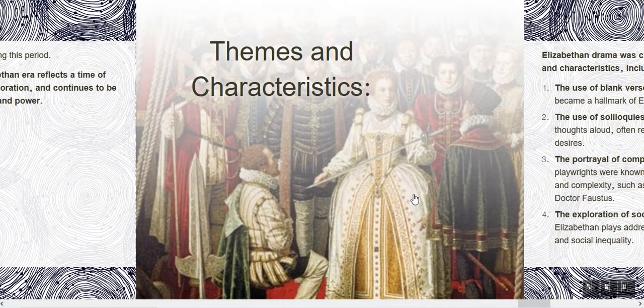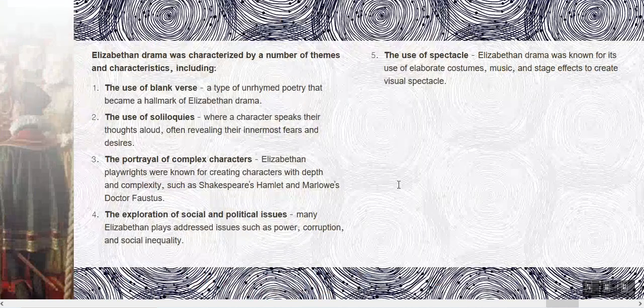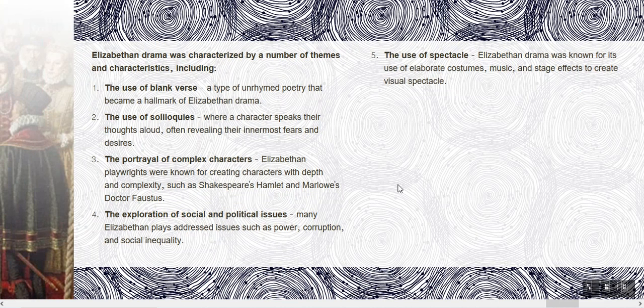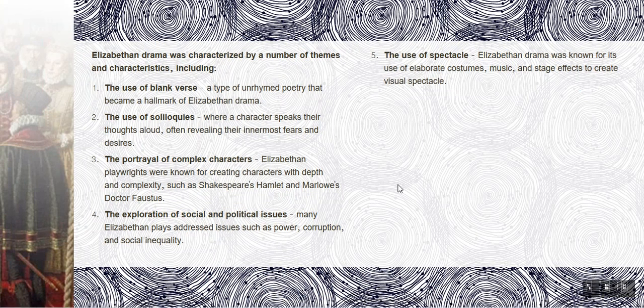Themes and characteristics. Elizabethan drama was characterized by a number of themes and characteristics, including the use of blank verse, the use of soliloquies, the portrayal of complex characters, the exploration of social and political issues, and the use of spectacle.